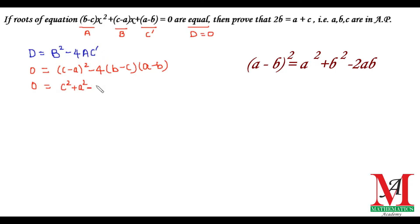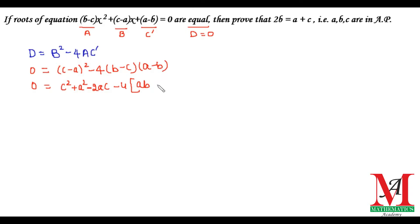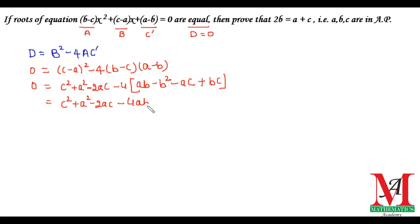On simplifying the bracket by applying the formula, we get c² + a² − 2ac. On multiplying the brackets we get: b·a = ab, b·b = b², c·a = ac, and c·b = bc. With the minus signs, on multiplying two minuses we get plus, giving us bc. On multiplying the 4 through the bracket we get −4ab, then plus 4bc, and then +4ac, and minus 4bc.